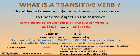Transitive verbs need an object to add meaning to a sentence. It means the sentence which has an object is a transitive sentence. To check the object in the sentence, you need to ask two question words: 'what' and 'whom.' 'What' is used for non-living things, and 'whom' is used for human beings. If you are getting the answer of 'what' or 'whom' in a sentence, it means an object is available.